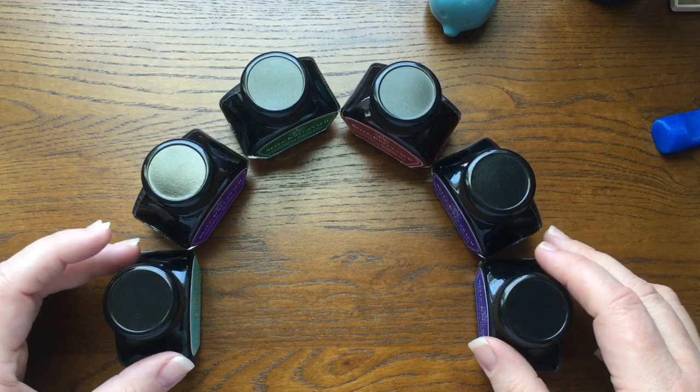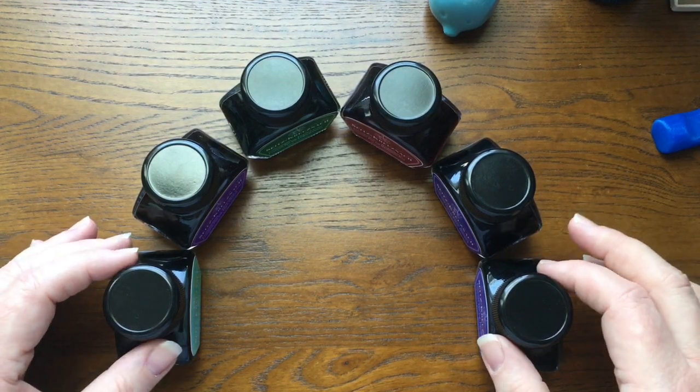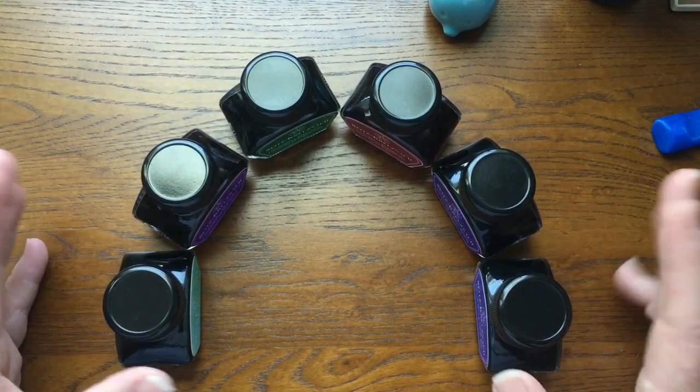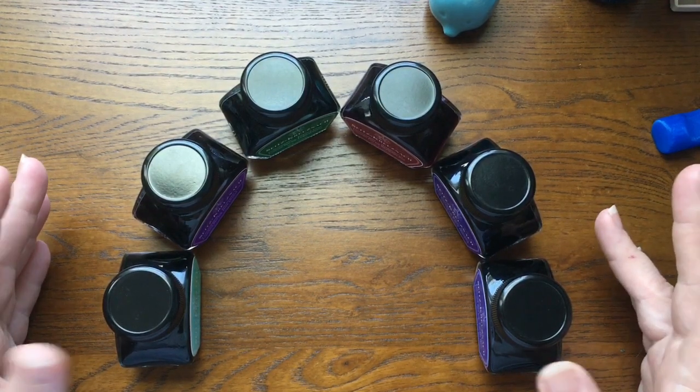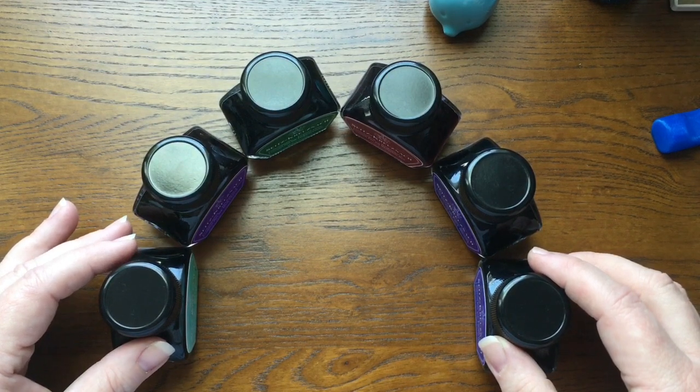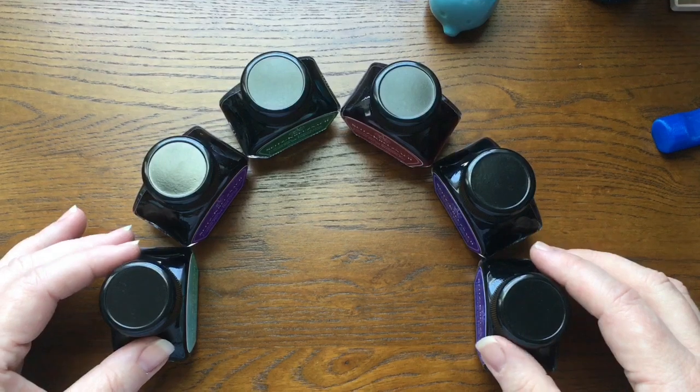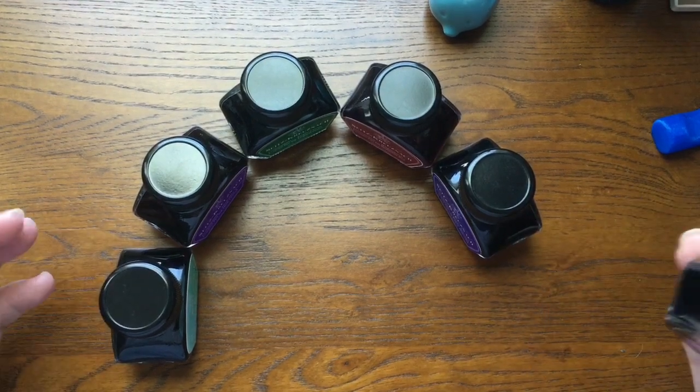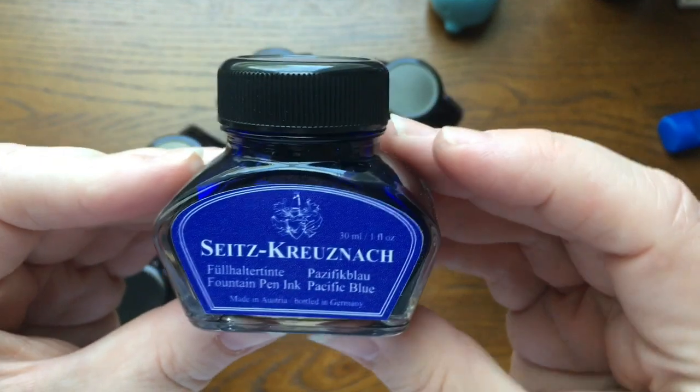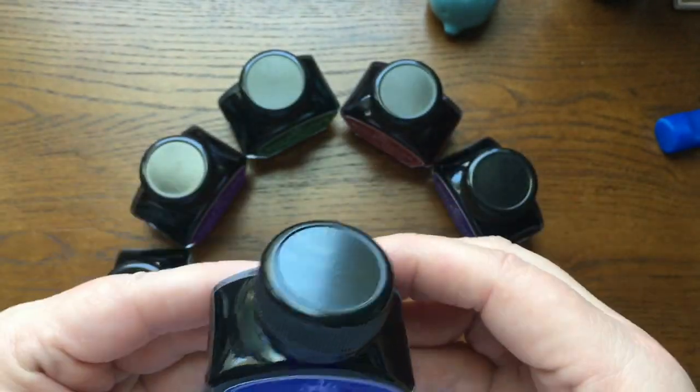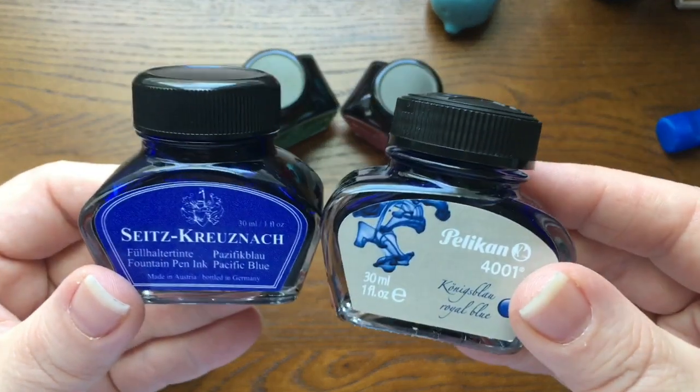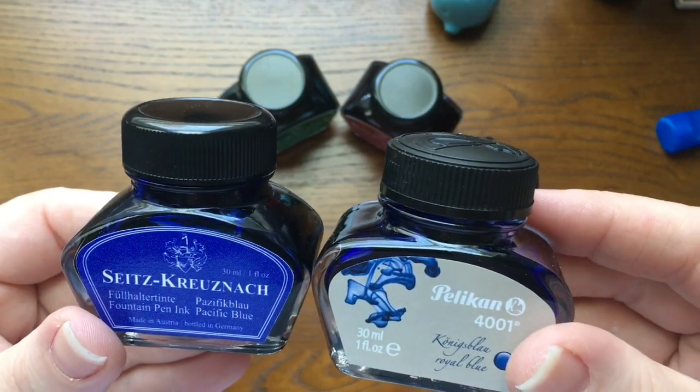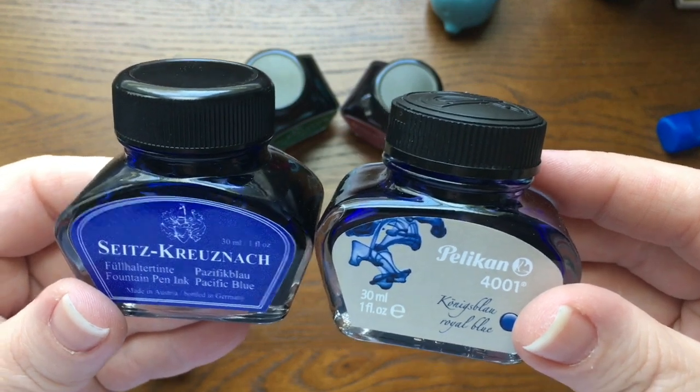I heard on Chris Signs' channel a while back that somebody had sent her a sample of a Sitz Kruzenach ink, and I was very interested in that, so I started looking into it. It is a website, an online retailer. They sell everything, and they have a writing section with pens and inks and all kinds of things. So I purchased some Sitz Kruzenach inks. This is what the bottle looks like, and if you'll notice, it looks suspiciously like a Pelican bottle. The Pelican bottle looks a little bit bigger. They're not exactly the same, but they are very close.